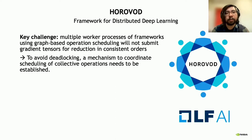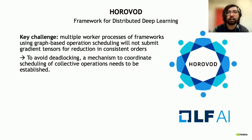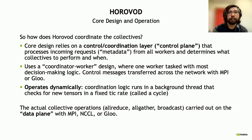Before moving on, we should describe what key challenge Horovod tries to solve. These deep learning frameworks typically use graph-based operation scheduling, meaning individual workers will not necessarily submit operations in deterministic orders. For a framework like Horovod, which facilitates global communication between workers, this out-of-order execution can cause problems, especially if workers are submitting collective operations out of order. In order to avoid deadlocking, a mechanism to coordinate and schedule these collective operations so they happen in a globally consistent order needs to be established.